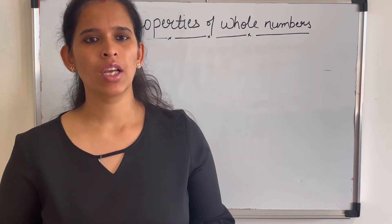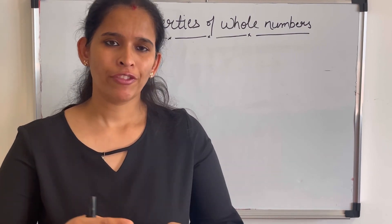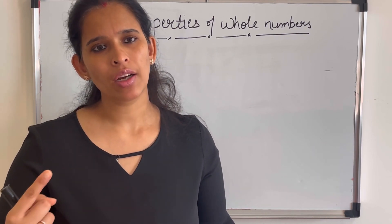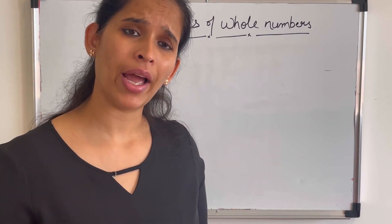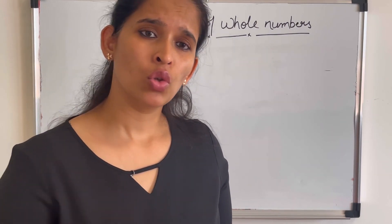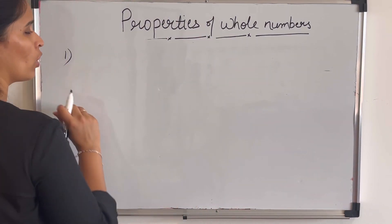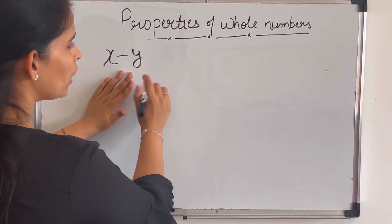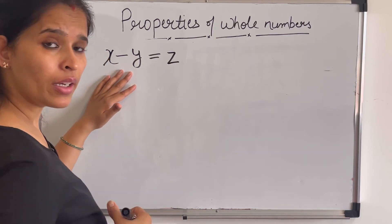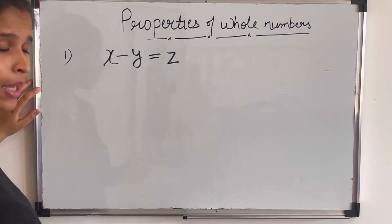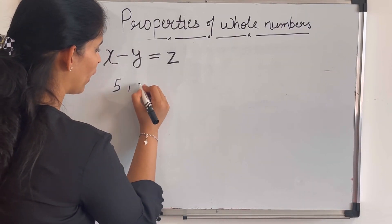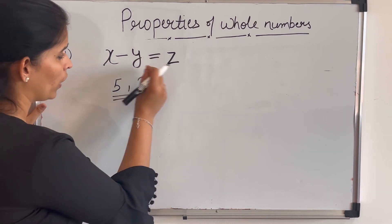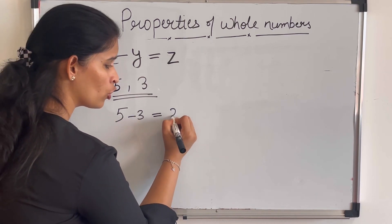The first property is the closure property. Closure means when we add or subtract two whole numbers, what will be the outcome? In addition, the outcome will be a whole number. But what will happen if I apply subtraction on two whole numbers? So first is closure — will x minus y be a whole number or something else? Let us understand through an example: I have 5 and 3, two whole numbers. 5 minus 3 equals 2, which is again a whole number.